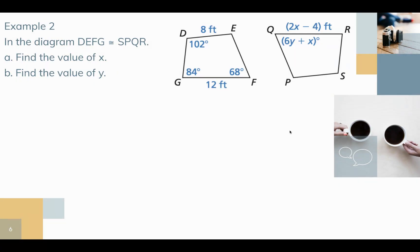In example two, we have two quadrilaterals. We're given that quadrilateral DEFG is congruent to quadrilateral SPQR. Remember, this statement gives us lots of information: D matches with S, E matches with P, F matches with Q, G matches with R. We also know side DE matches with SP, EF matches with PQ, and so forth. We're asked to find the value of X.